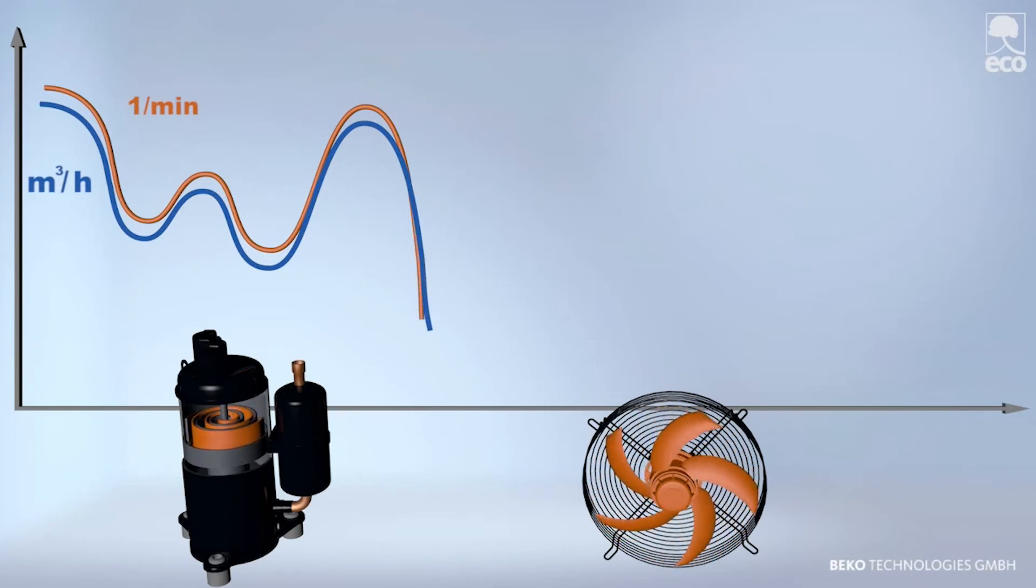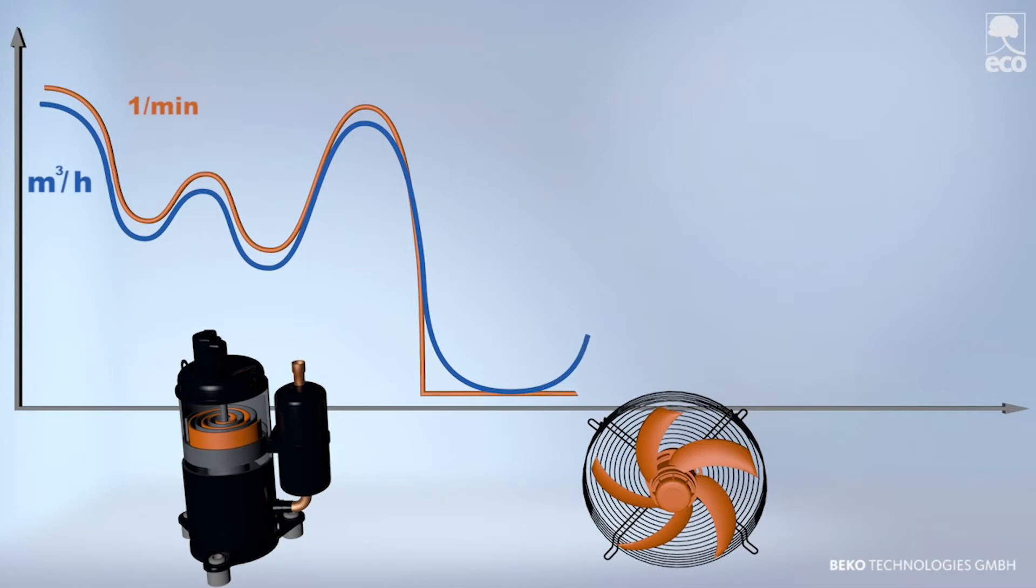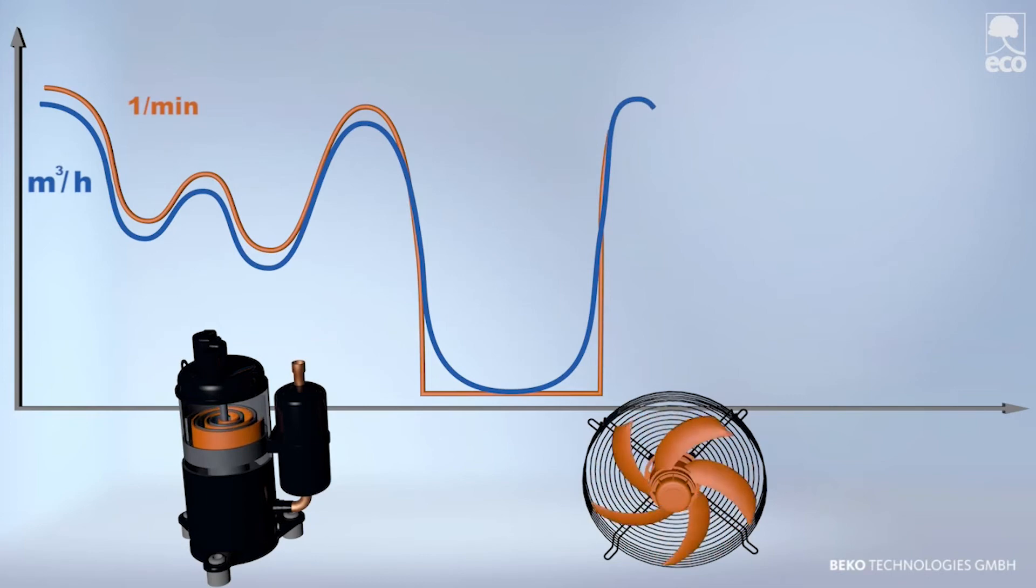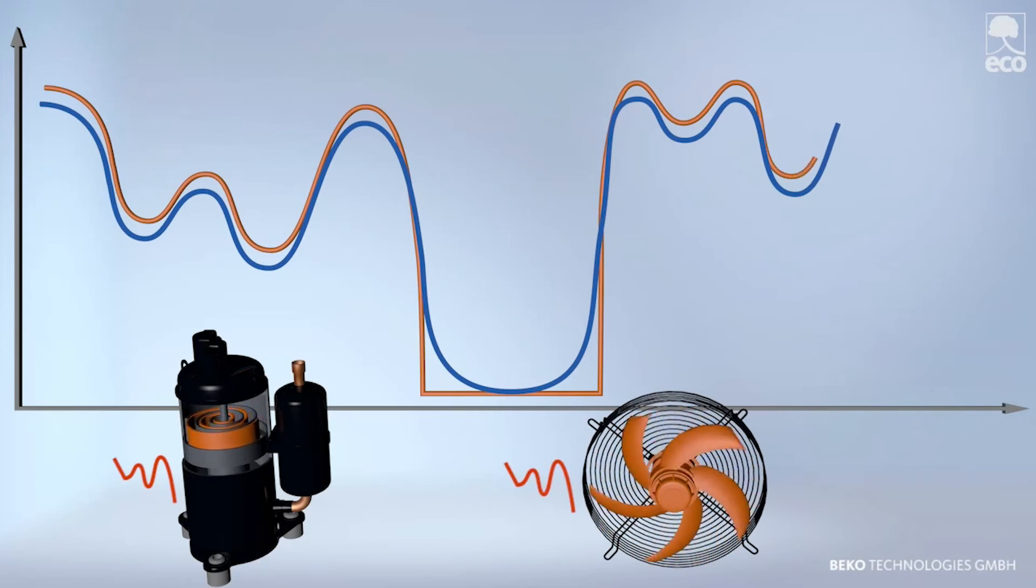After reaching a certain system size, the drying performance is controlled by changing the frequency of the compressor, and thus even more finely adjusted to the volume flow. Larger dryers adapt both the speeds of the compressor and the fan to match the volume flow.